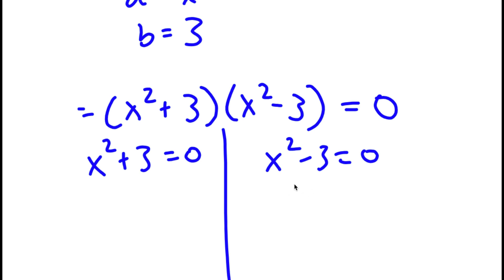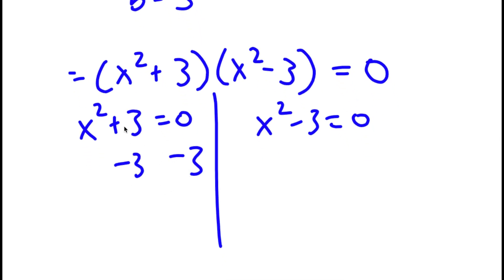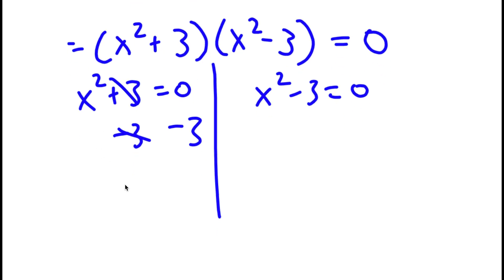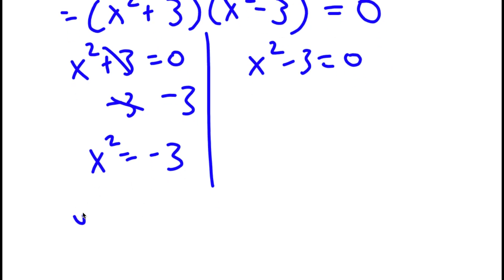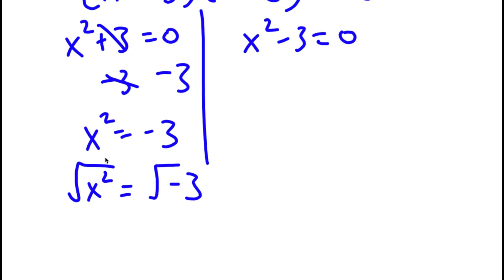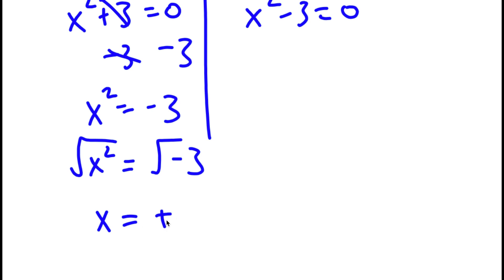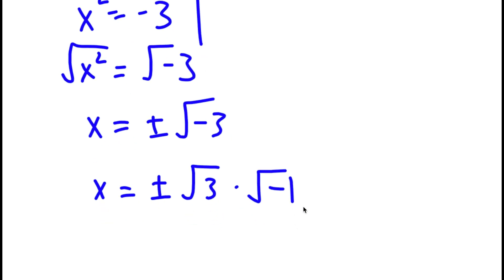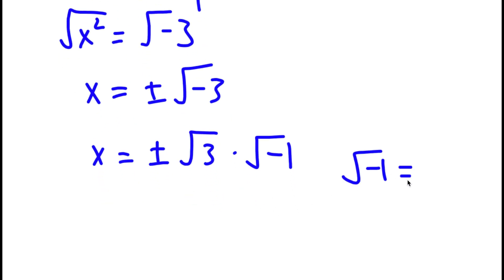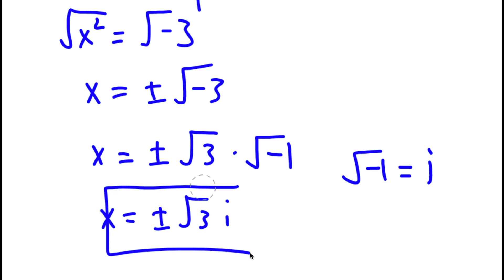Starting with x squared plus 3 equals 0: subtract 3 from both sides to get x squared equals negative 3. Taking the square root on both sides, x equals plus or minus the square root of negative 3. I can rewrite the square root of negative 3 as the square root of 3 times the square root of negative 1. And since the square root of negative 1 equals the imaginary number i, x equals plus or minus square root of 3 times i. So these are two solutions.